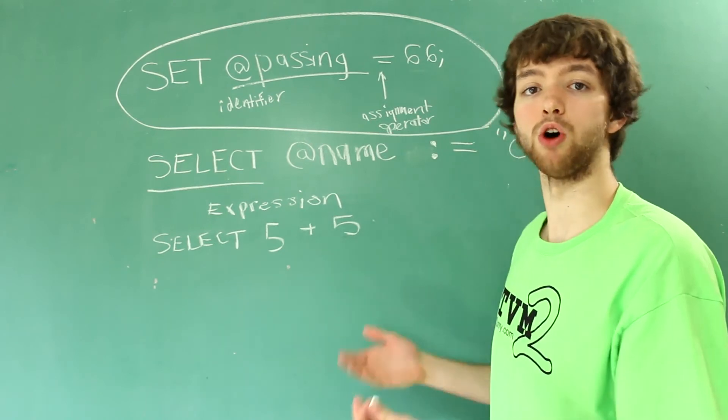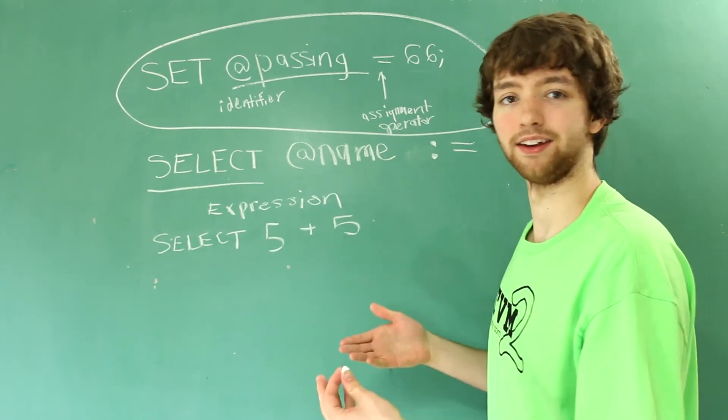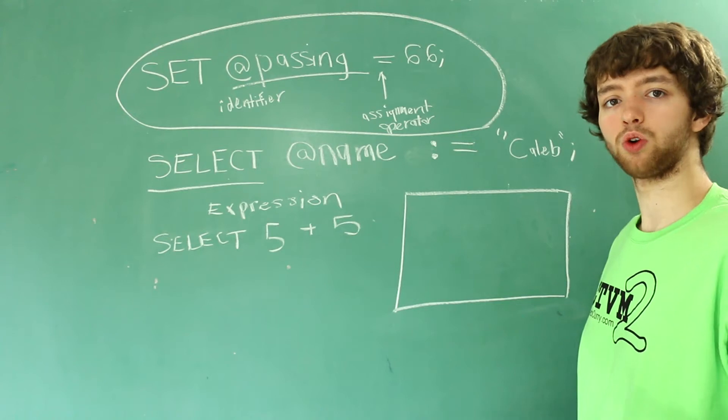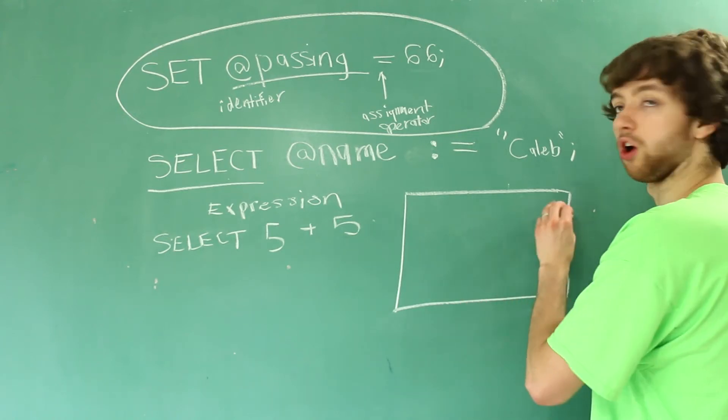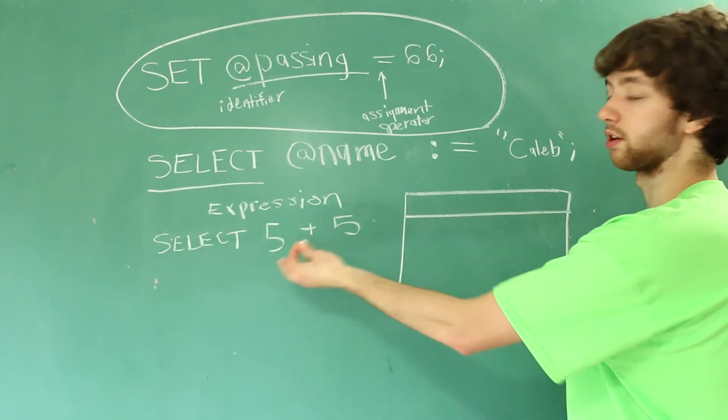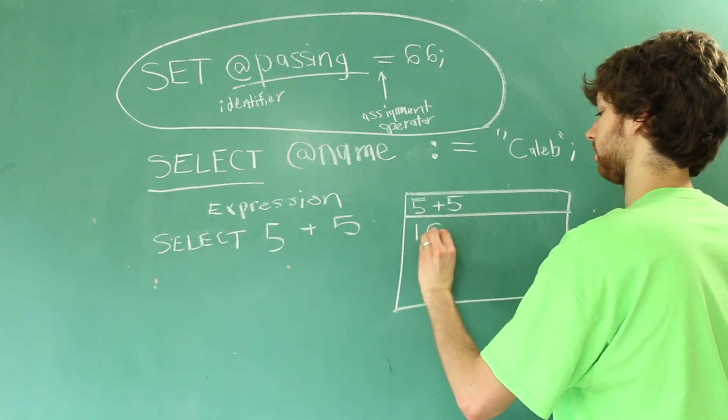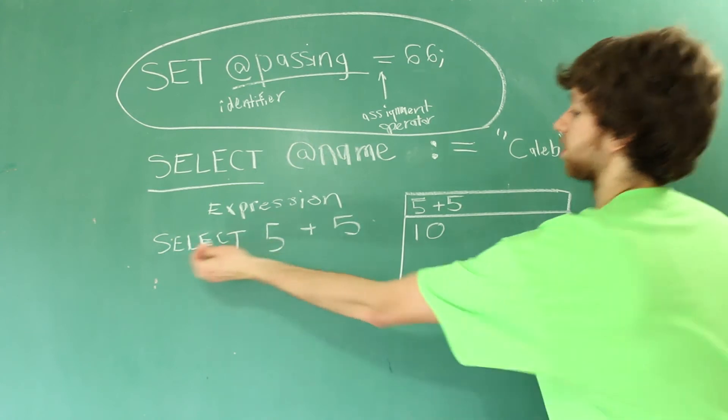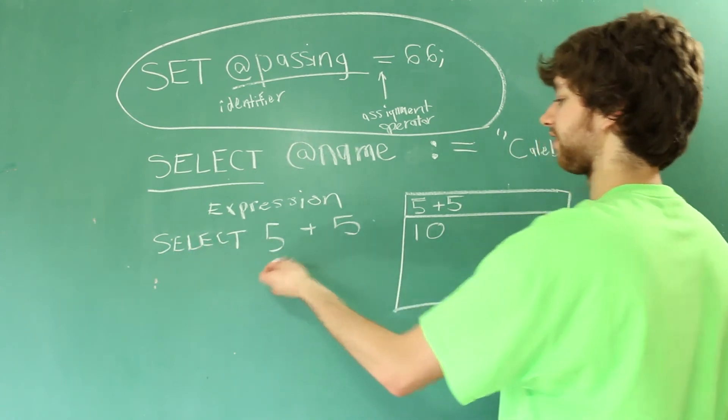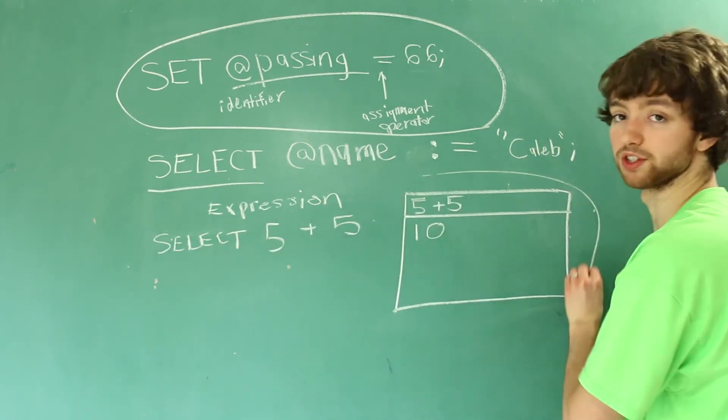So normally when we have a result table the column name is up here. Instead it's going to be the expression and then we'll get the result under that. So this is what this is going to return - if you go select 5 plus 5 you're going to get this result table.